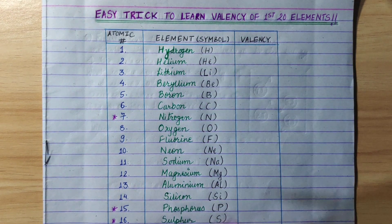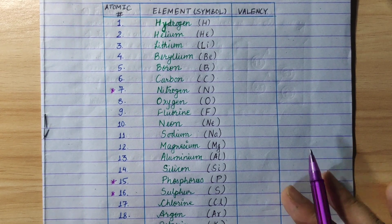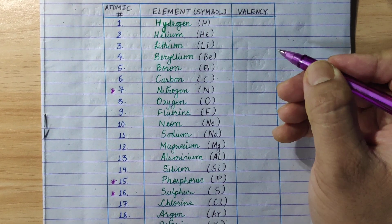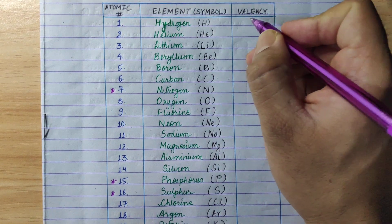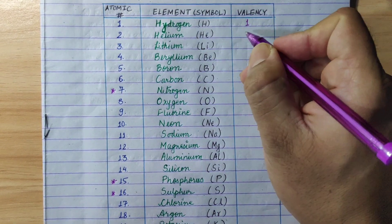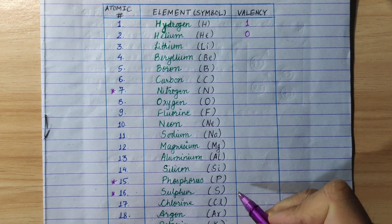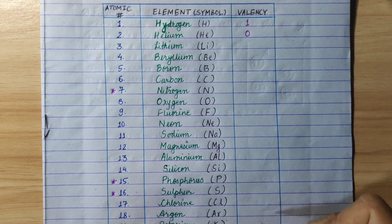These are the first 20 elements. How do we show the valency? This pattern we show you. What should we show you? Hydrogen 1, helium 0. This is 1 and 0. Then I will follow a specific pattern.